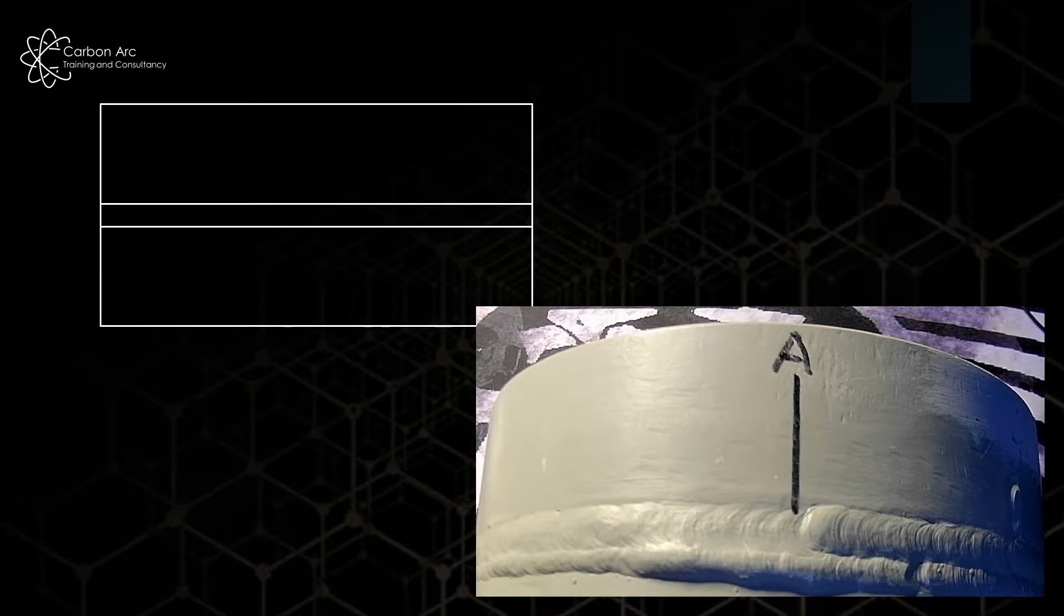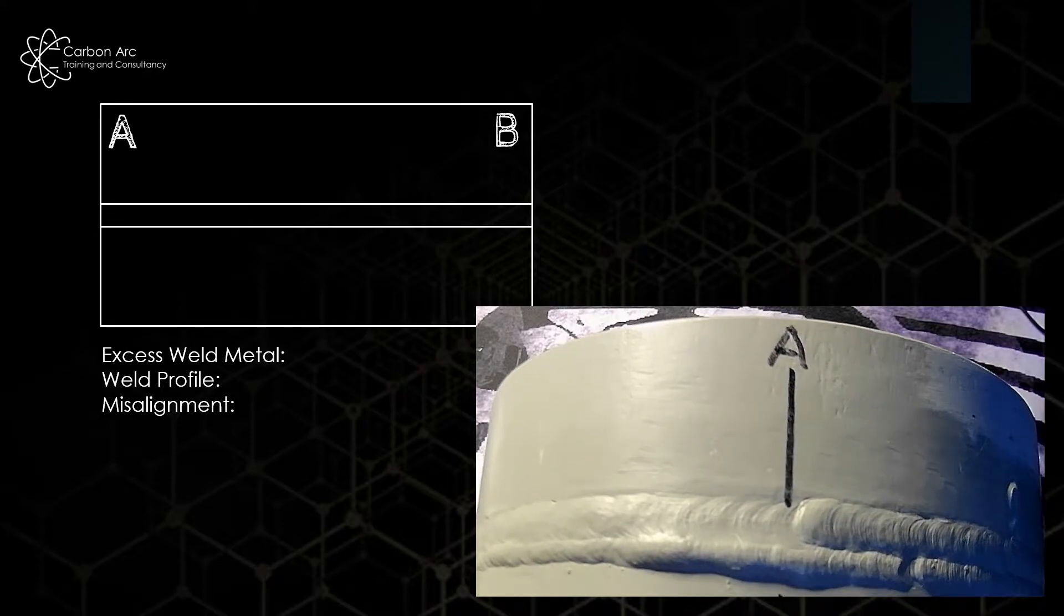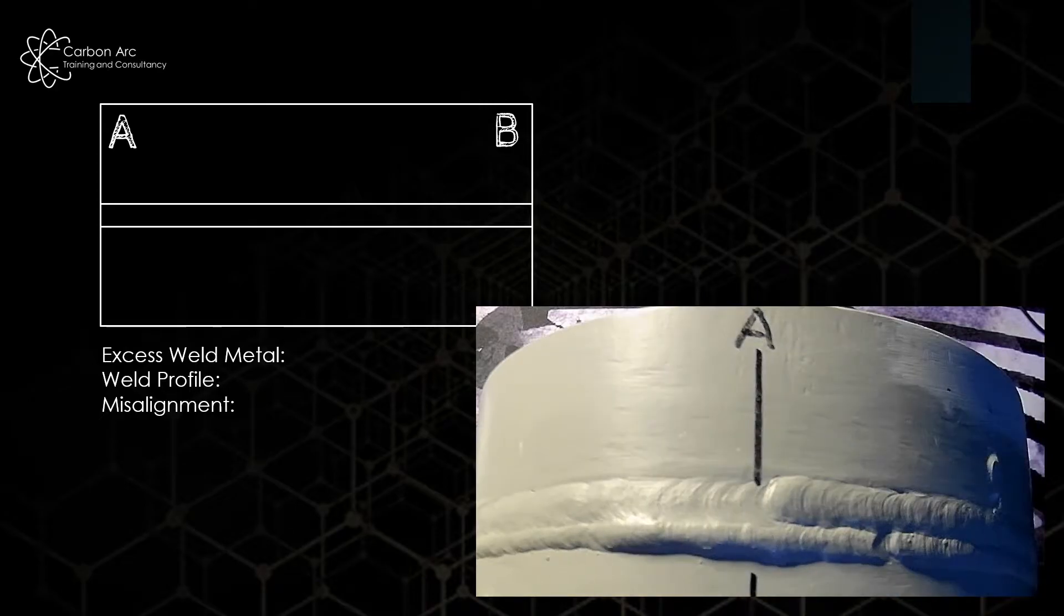Starting off, what you'll see on the report is a series of locations along the bottom which will have excess weld metal, profile, and misalignment on them. The idea here is that you take your weld gauge, you measure your cap height, you decide if your profile is good or poor.